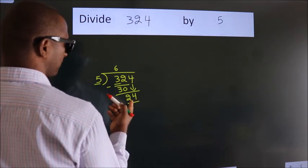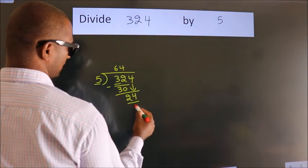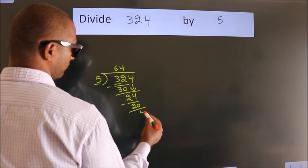A number close to 24 in the 5 table is 5 times 4, which is 20. Now we subtract. We get 4.